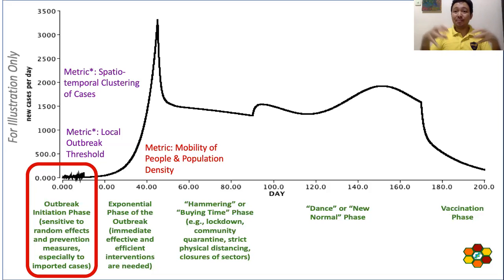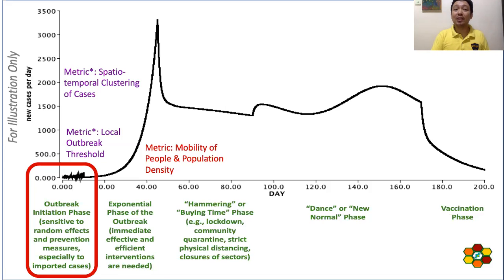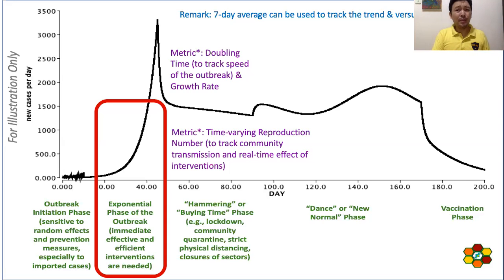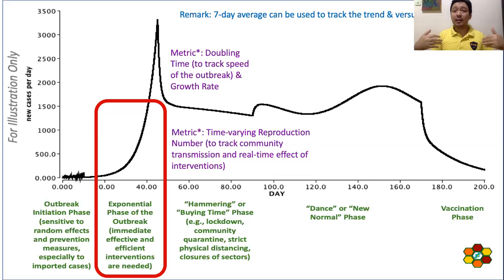If there are many cases in one place, that would set an alarm. If we're not able to control or contain the start of the outbreak, then we will enter an exponential phase. This is exponential because it is not a linear increase — it's faster, exponential. There could be many metrics like the doubling time: the number of days for the number of cases to double. This gives us the speed of the exponential phase, and also what we call the time-varying reproduction number.